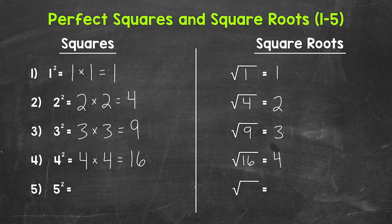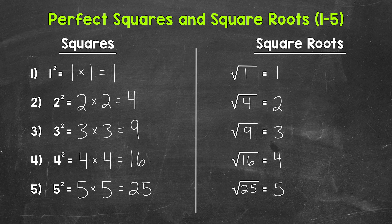5 squared means 5 times 5. So 5 squared equals 25. That means that the square root of 25 equals 5.